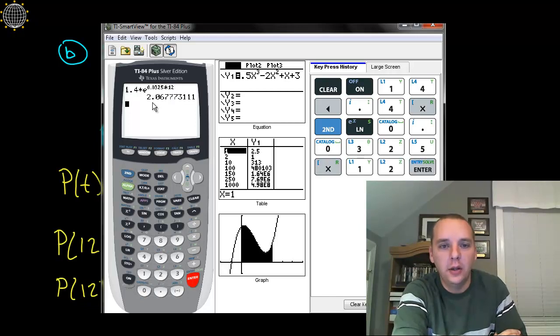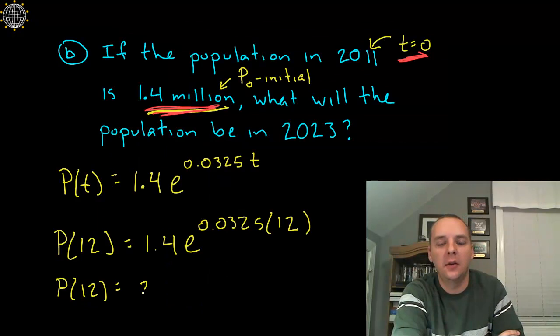Push enter, looks like it's grown to 2.068 rounded, 2.068. And that's million people.